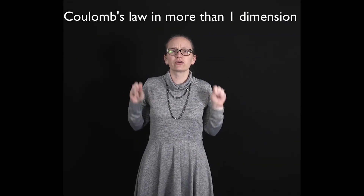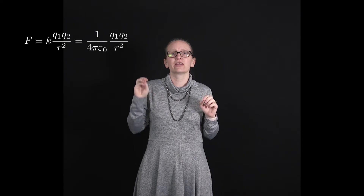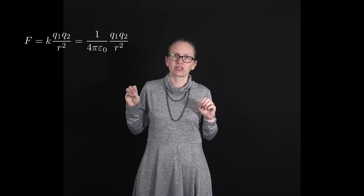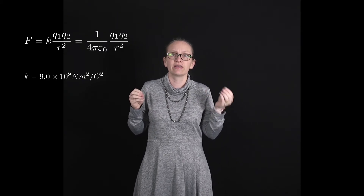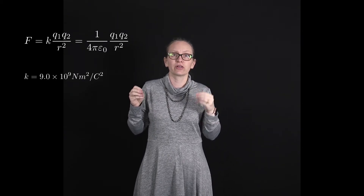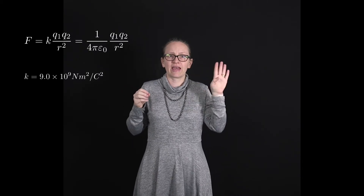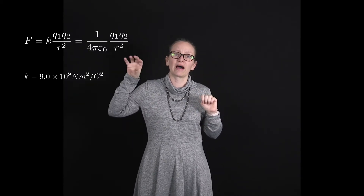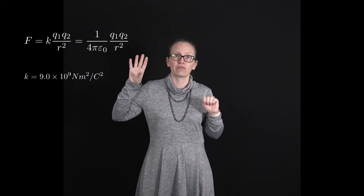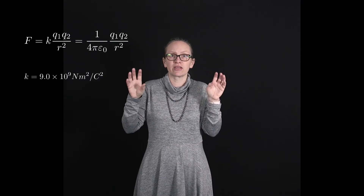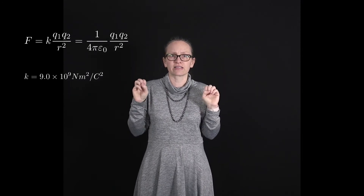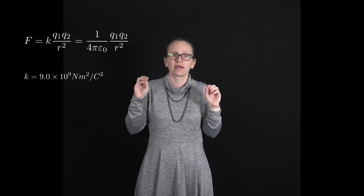We've already seen Coulomb's law and seen how we can apply it in a one-dimensional case. Coulomb's law is given by F = K Q1 Q2 / R², where K is Coulomb's constant, 9.0 × 10⁹ N·m²/C². We also sometimes see K written as 1 / (4πε₀), where ε₀ is the permittivity of free space. Q1 and Q2 are the charges measured in Coulombs, and R is the separation between the charges measured in meters.